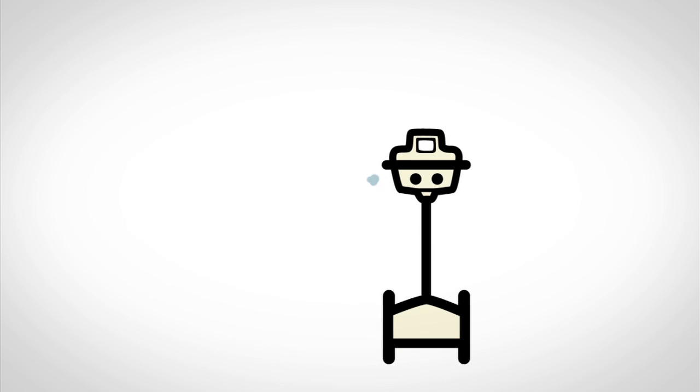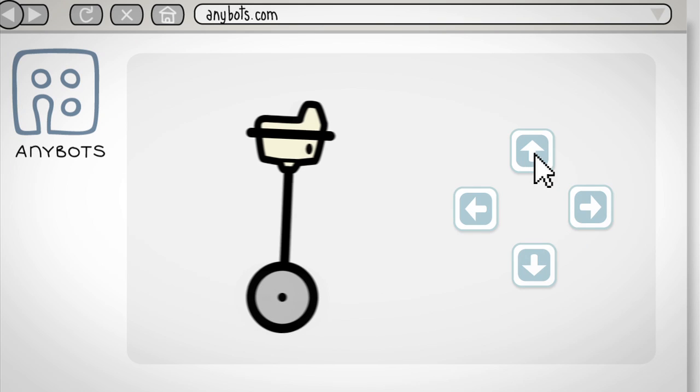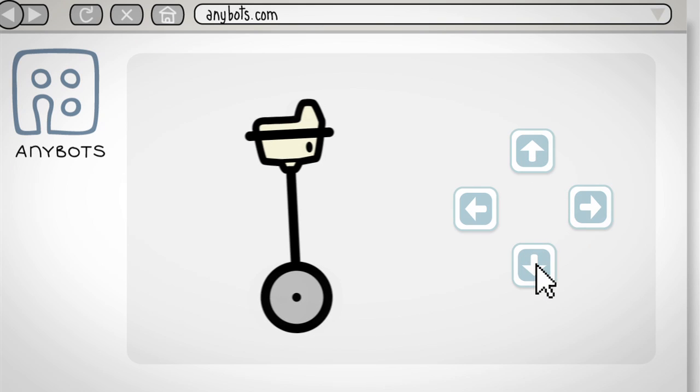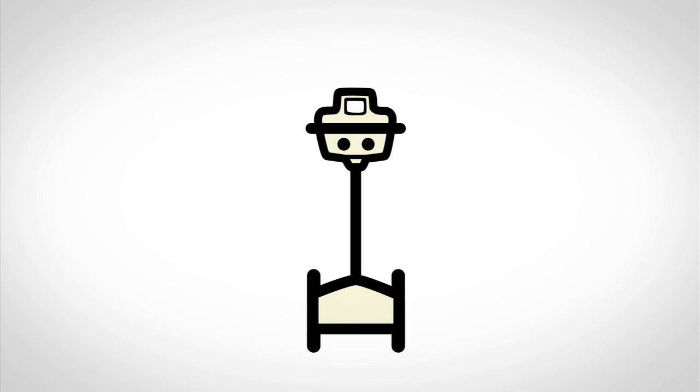Now you can see and hear anything through the AnyBot, but the coolest thing is that you can now move your AnyBot anywhere. All you have to do is use your arrow keys to go forward, backwards, or turn. Basically, now you have become an AnyBot.